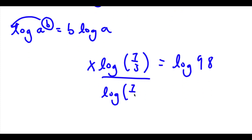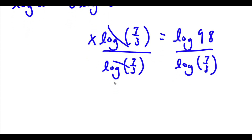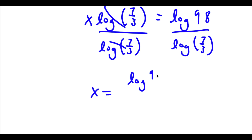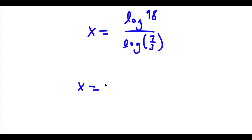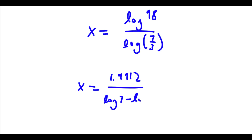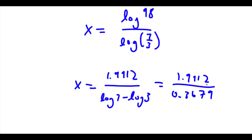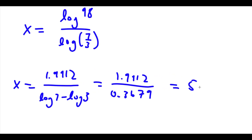Now I can divide both sides by log 7 over 3, so I'll be left with x is equal to log 98 over log 7 over 3. Log 98 is approximately 1.9912, and log 7 over 3 equals log 7 minus log 3, which is approximately 0.3679. So I have 1.9912 over 0.3679, which is equal to approximately 5.4123. So this is our answer.